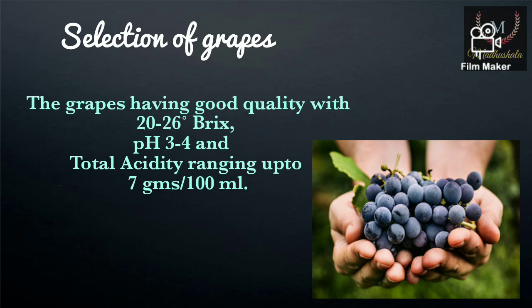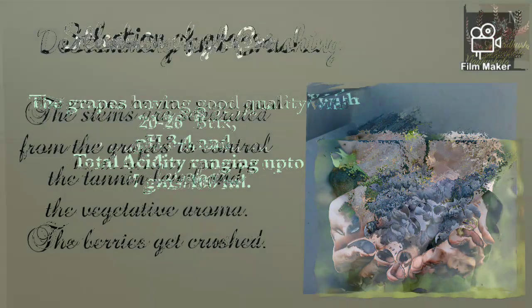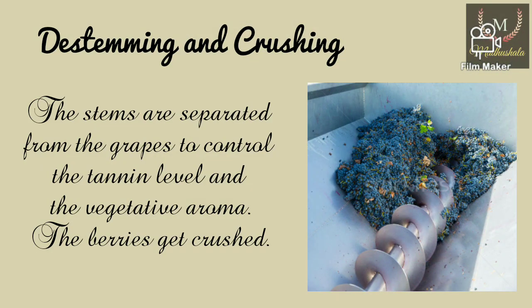The grapes are mostly hand-picked or harvested by machines. The flavors of grapes decide the flavor of wine, so selection and harvest is an important step in winemaking. After the grapes are brought into the winery, they are added to the de-stemming and crushing machine. The de-stemmer removes the green stem of the grapes to control excessive tannin levels and vegetative aroma in the wine. The berries are then crushed, making the juice squeeze out.